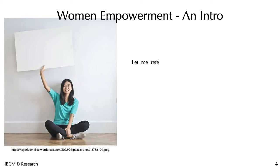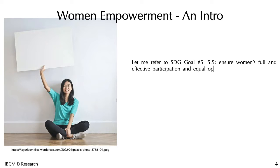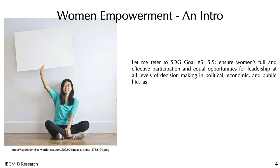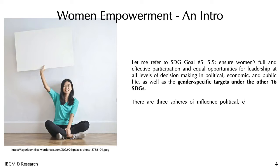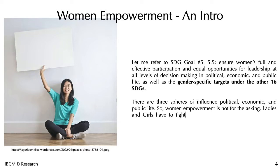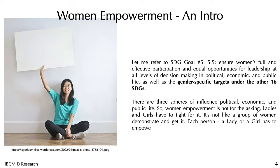Referring to SDG Goal 5.5: ensure women's full and effective participation and equal opportunities for leadership at all levels of decision making in political, economic, and public life. There are three spheres of influence: political, economic, and public life. Women empowerment is not for the asking — ladies and girls have to fight for it. Each person, a lady or a girl, has to empower herself.